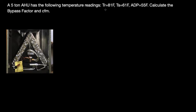What we have in this example is a five-ton air handler unit. The temperature readings are: temperature of the return side and temperature of the supply side. This is return, this is supply, and this is the ADP — the apparatus dew point — which is pretty much the temperature of the coil. We're going to call ADP as temperature three.